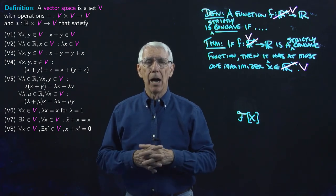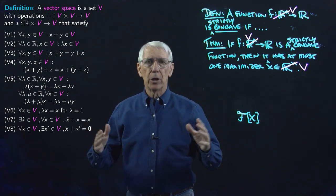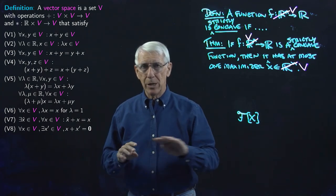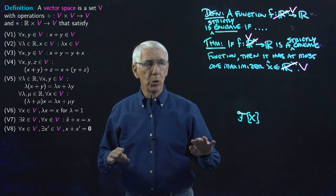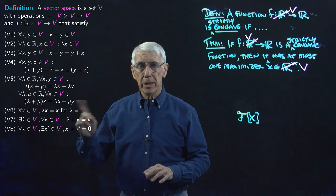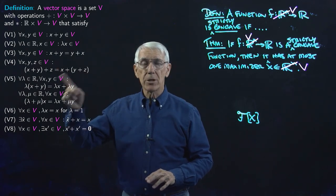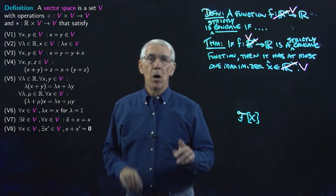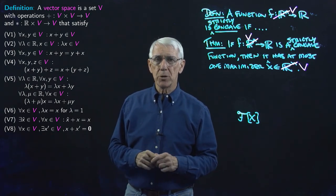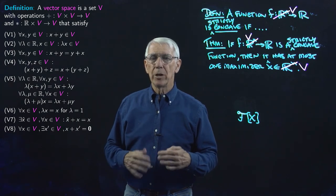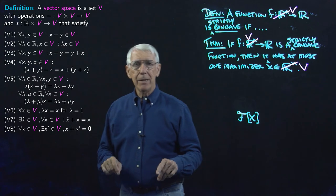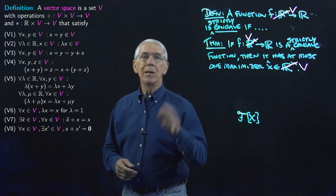For example, if we prove the strictly-concave-maximizer theorem for an arbitrary vector space, then any time a decision maker maximizes a strictly concave objective function on a vector space, that decision maker has at most one maximizing decision. This gives us a powerful way of putting together many results. We're going to see lots of vector spaces throughout this course and throughout your economics program — and next lecture we'll give several more examples and start building up the theory of vector spaces.